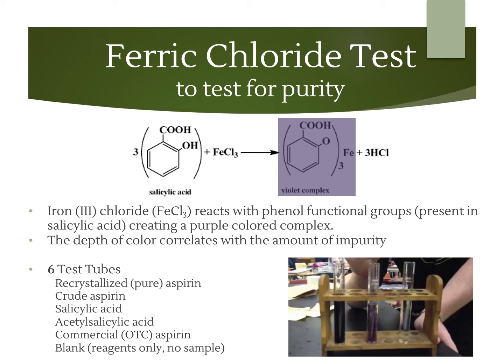Salicylic acid is what we started with to make our aspirin. So if there's still some present in either the crude or recrystallized aspirin, that solution will turn purple, indicating that our aspirin isn't totally pure. We're going to test the crude aspirin, the recrystallized aspirin (which should be more pure), some salicylic acid so you can see the deep purple it turns, some acetylsalicylic acid (the technical term for aspirin), some commercial over-the-counter aspirin to see how pure that is, and a blank to show the color without anything in it.